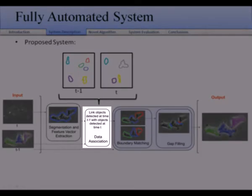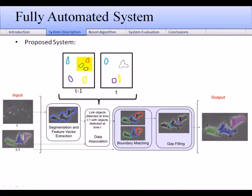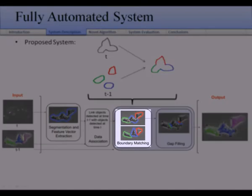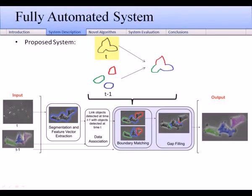Then, a data association module identifies all cases where a group of cells from the previous image appear as a cluster in the current image. Next, the boundary matching module divides the merged boundary into a connection of segments from the individual cells included in the cluster.